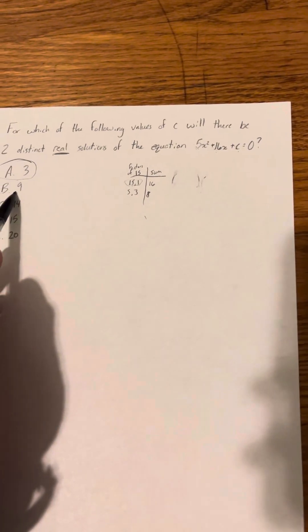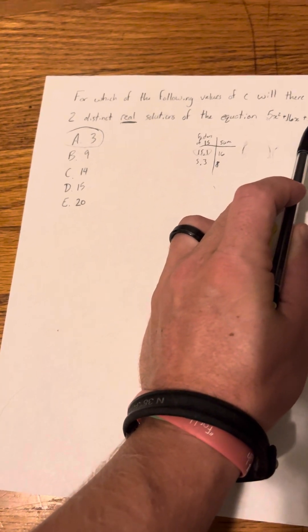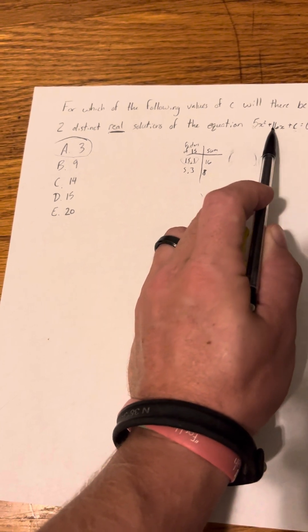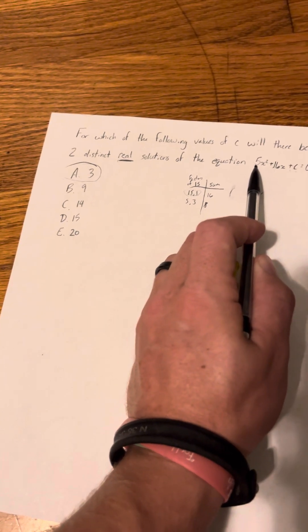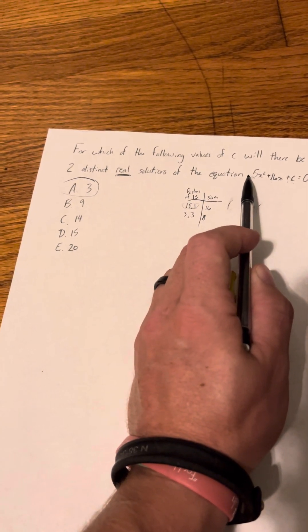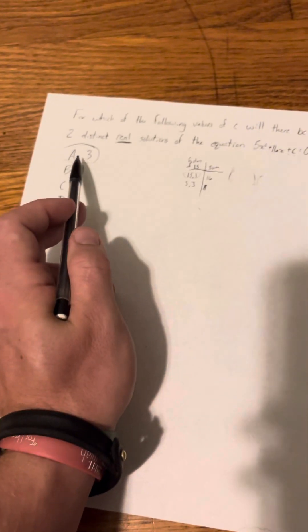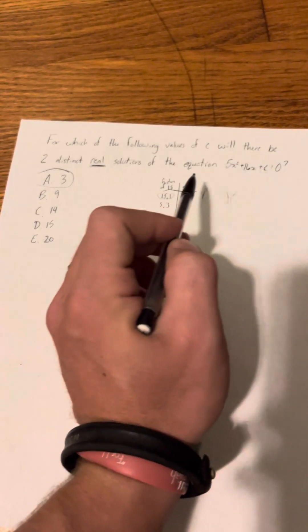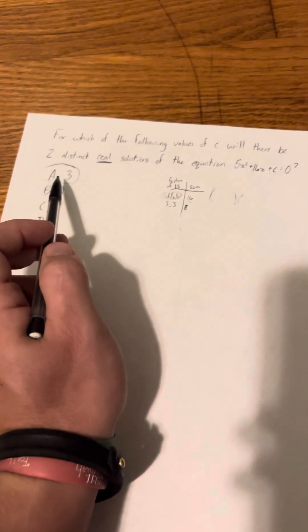Okay, because like if I plug in 9 here, 5 times 9 gives me 45. There's no factors of 45 that add to be 16. Same with 14. If I plug in 14, multiply it by 5, I get 70. There's no factors of 70 that add to be 16. And so on. So just the fact that when I plugged in 3 and multiplied 5 and 3 and got factors of it, factors of 15 that add to be 16, that automatically tells me that A is the answer.